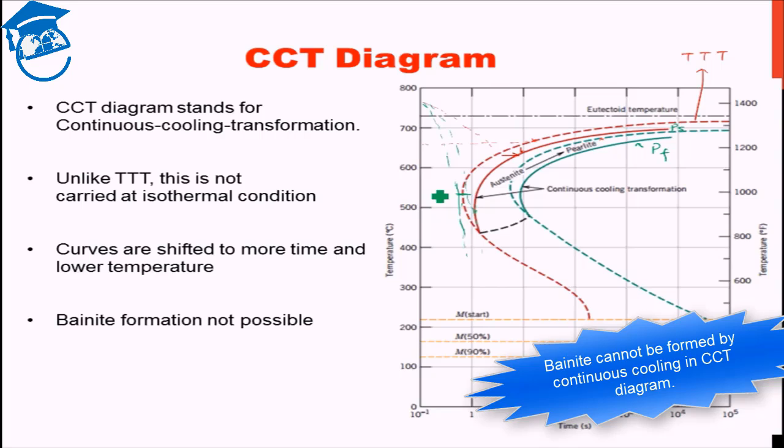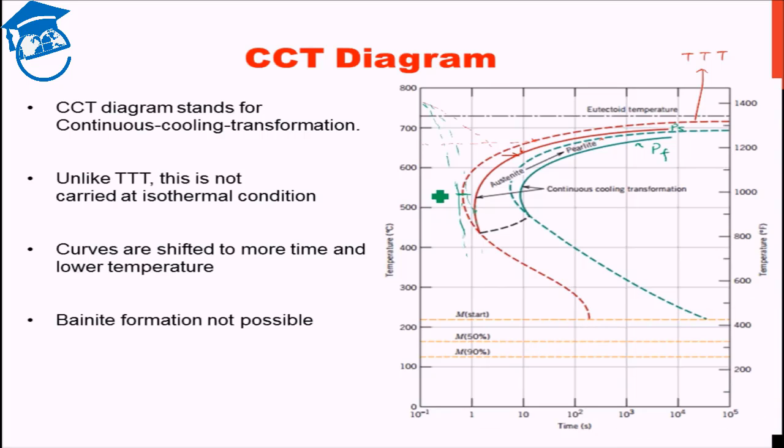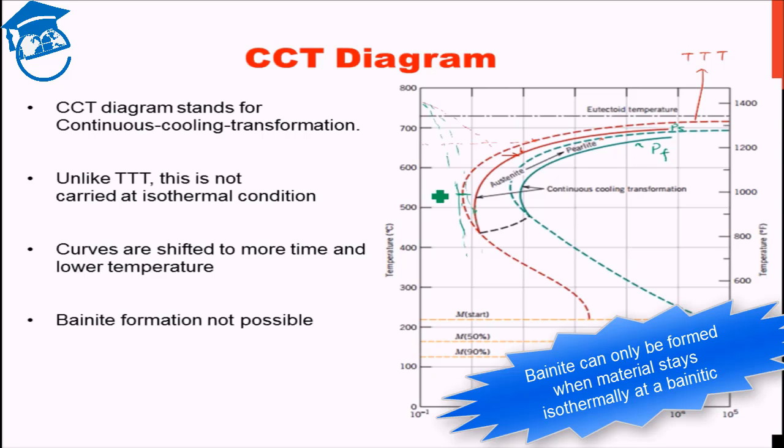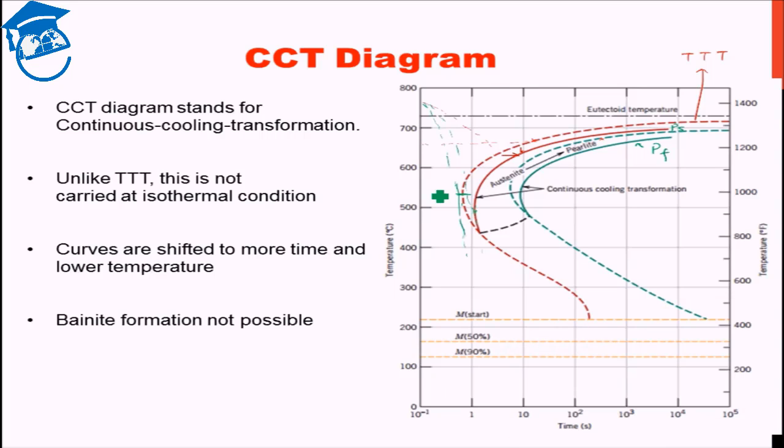Bainite can only be formed when you isothermally let the material stay at the bainitic formation temperature. Continuous cooling at max will hit the nose. And beyond that, it won't strike the bainite start curve. It is physically impossible for bainite to form during continuous cooling.